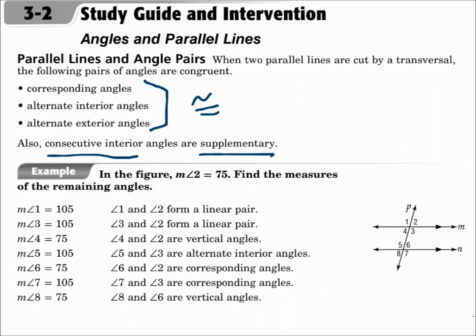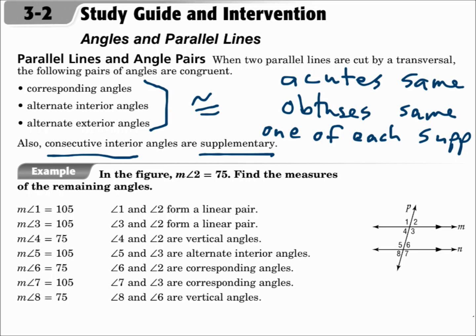Keep in mind with these pictures that when parallel lines are cut by a transversal, the acute angles will be the same, the obtuse angles will be the same, and if you have one of each, those will be supplementary. So acutes are equal, obtuses are equal, and one of each adds up to 180.